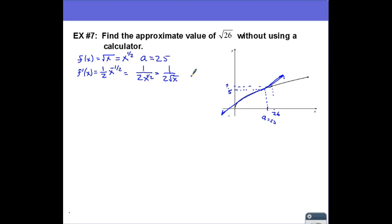Now, since a is equal to 25, let's do f prime of a. So f prime of a is going to be 1 over 2 times the square root of 25. So that's 1 over 2 times 5, which is 1 over 10.